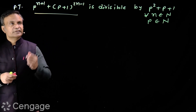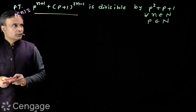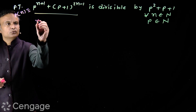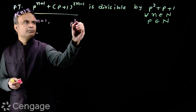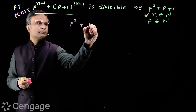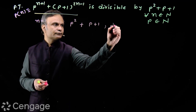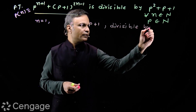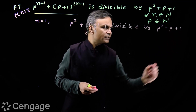We consider this statement as P(n). Let us first prove that this is true for n=1. When I put n=1, I get p²+p+1, and this is divisible by p²+p+1.